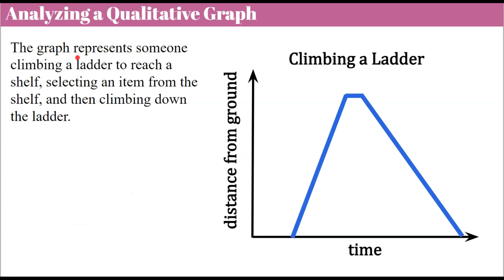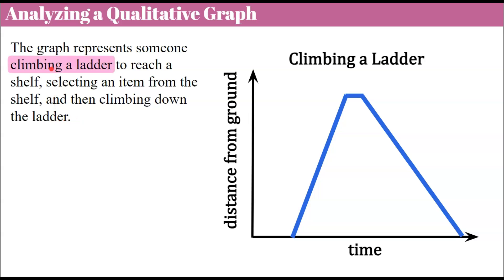Here's our first qualitative graph, and we're going to analyze it. The title is Climbing a Ladder, showing the relationship between time and the distance from the ground. The graph represents someone climbing a ladder to reach a shelf, selecting an item from the shelf, and then climbing down the ladder. As we read the graph left to right, the first segment is linear — it's a straight segment, not curved — and it's increasing.